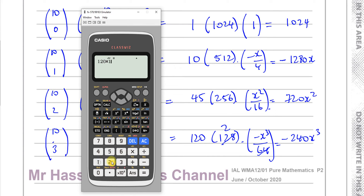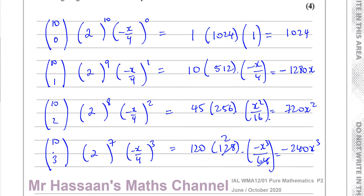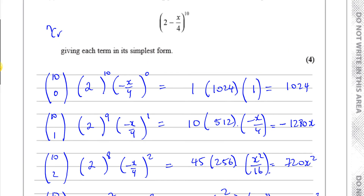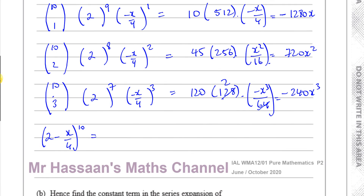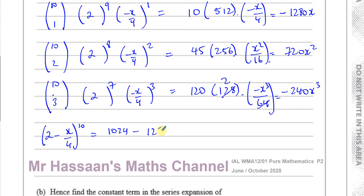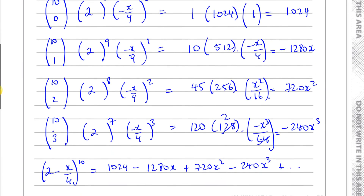So (2 - x/4)^10 = 1024 - 1280x + 720x² - 240x³. That's as far as we needed to go, because it asked us for the first four terms in ascending powers of x. We made sure that the term with x in it is in the bracket with the power increasing — that was an important thing to do here.